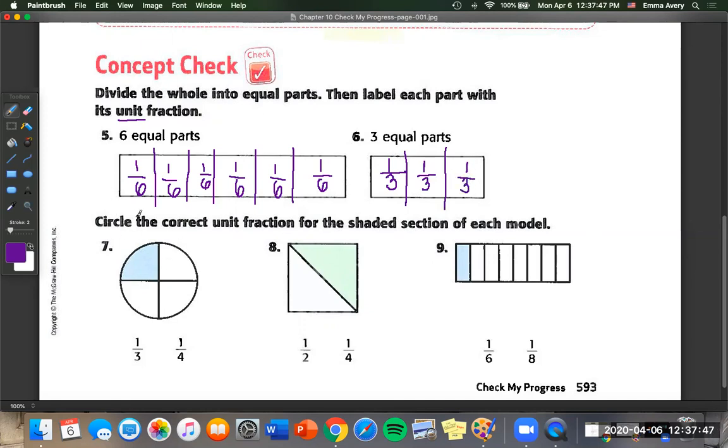Now on to number seven, we're going to circle the correct unit fraction for the shaded section. So we just have one shaded of one, two, three, four pieces. So that's going to be one fourth. For number eight, we've got only one, two pieces. It's going to be one half.